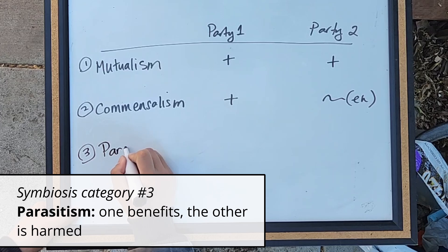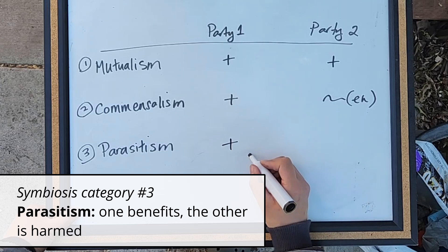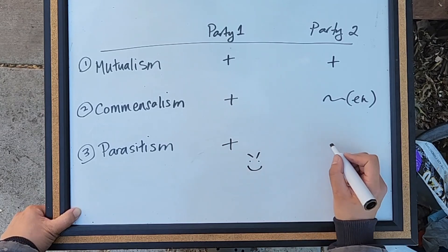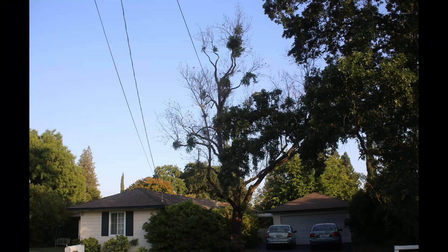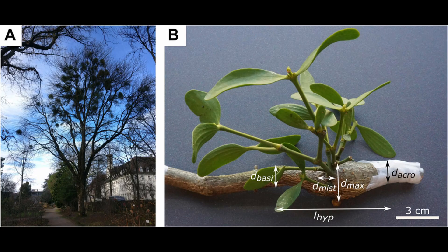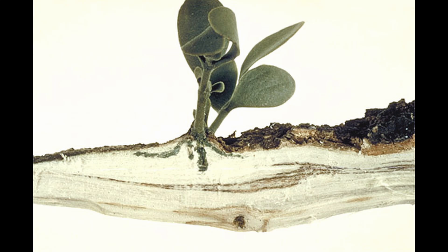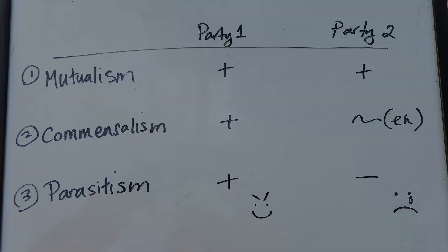The third category is where one party benefits and the other is harmed — this is called parasitism. Examples include parasitic plants or parasitic wasps. Parasitic plants like mistletoe tap into their host and pull out water, nutrients, and minerals directly, which has a direct impact on the host's health. They don't give anything in exchange — it's a one-way take. So those are the three types of symbiosis. If you don't want to get confused, you could stick with the more mutualistic definition covered in most books.